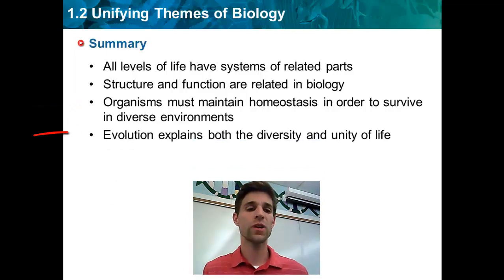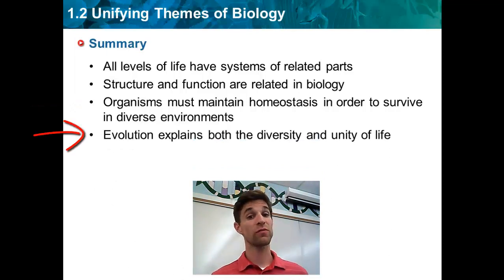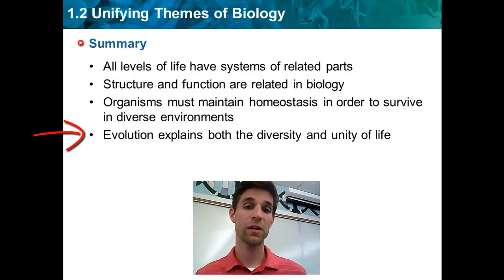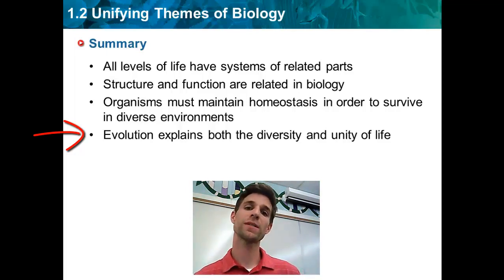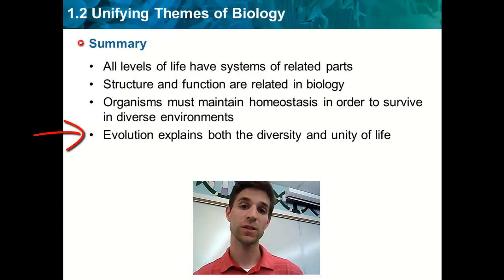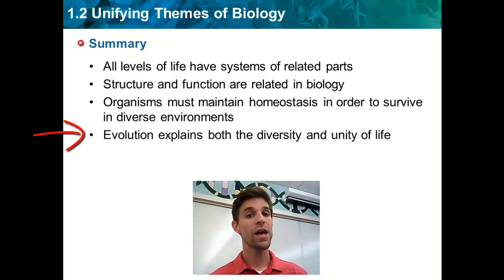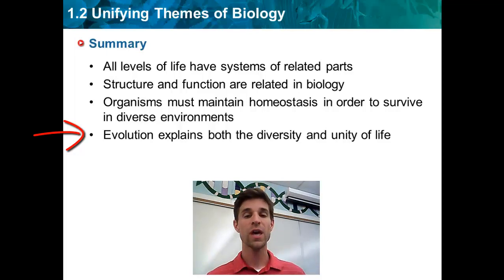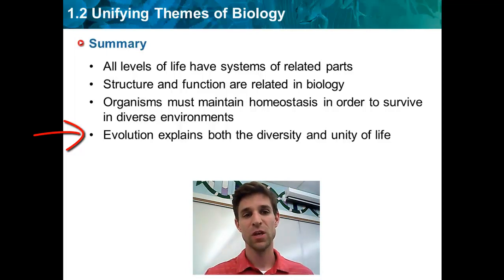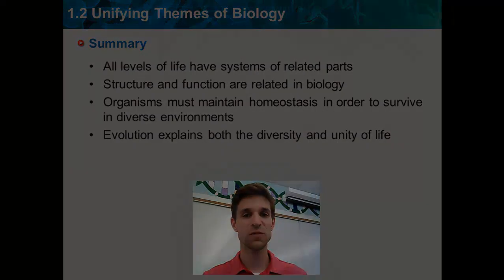The last theme is that evolution explains both the diversity of life — the number of species we have here on Earth — and also the unity of life. The process of species having certain genetic traits and adaptations that natural selection can act upon brings about changes in species over time. That accounts for the number of species we see here on Earth, but it also accounts for the fact that all species on Earth are related and share a lot of characteristics. So there are your unifying themes of biology for Chapter 1, Section 2, and I'll see you in the next video.